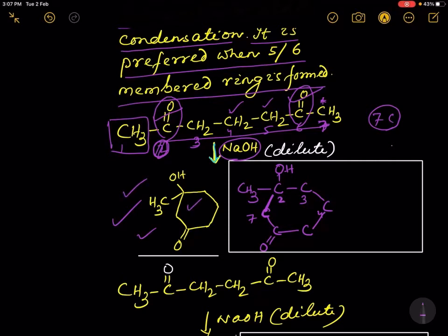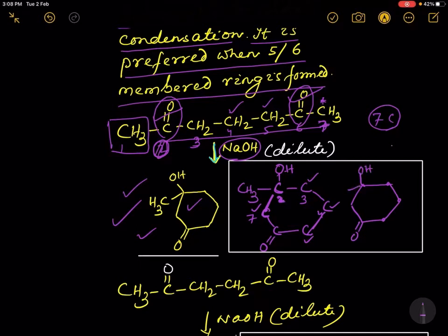That H will be bonded over here with the oxygen. The compound is already written on the screen. You see this carbon written in the form of a dot, then this carbon, then the next, then a double bond O is written, then this carbon is bonded with this carbon, and this position is bonded to one OH group and a CH₃ group.